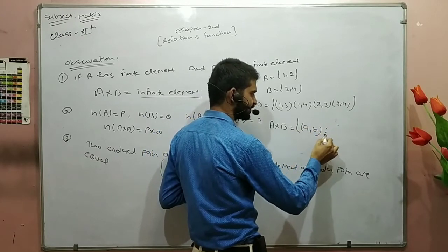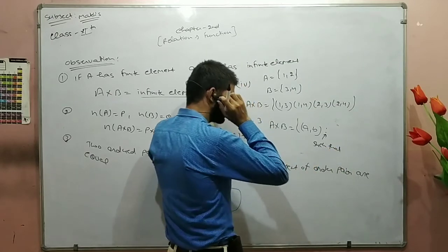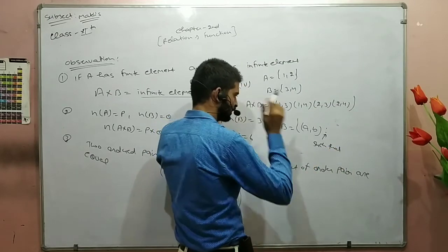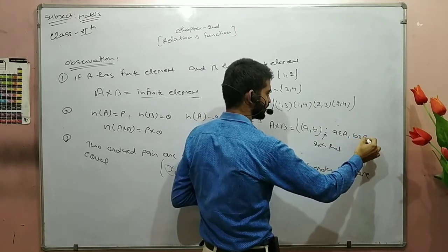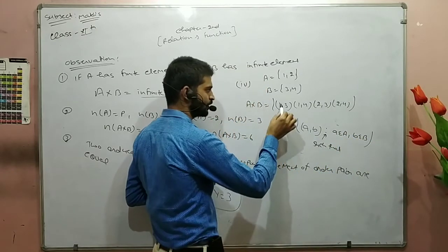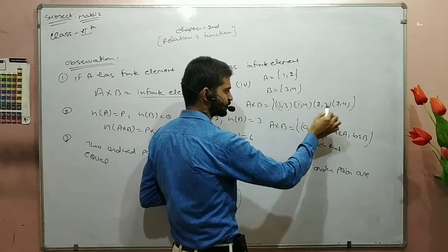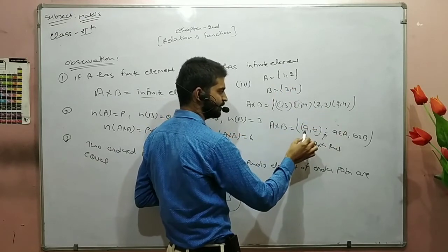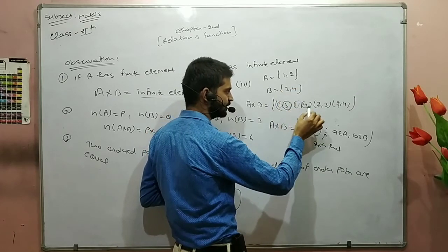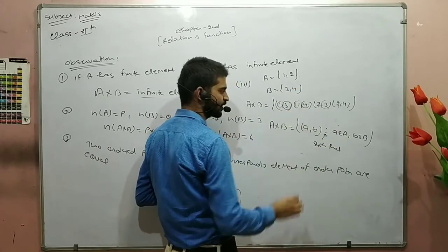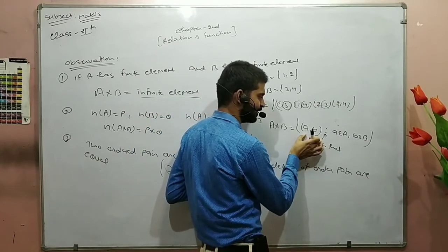Such that small a belongs to capital A and small b belongs to capital B. You can check: the first element belongs to A, and the second element — (3,4) — belongs to B. So I have written (a, b) where the first element belongs to A and the second element belongs to B.